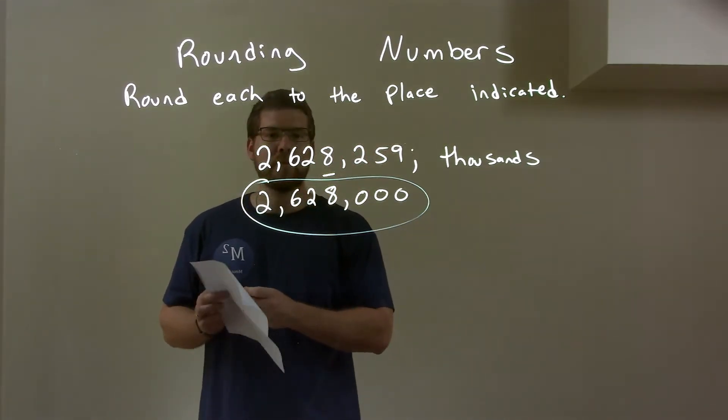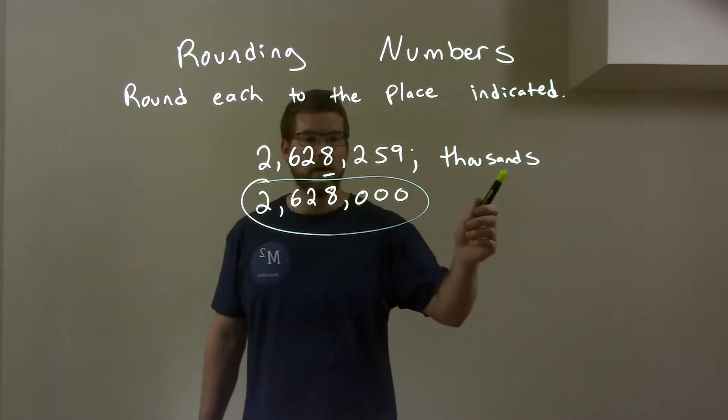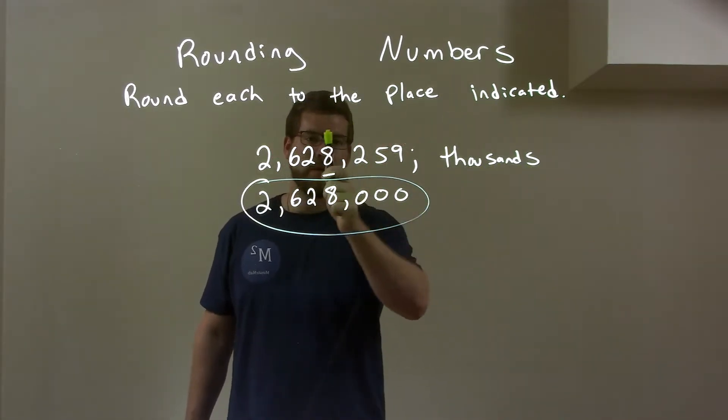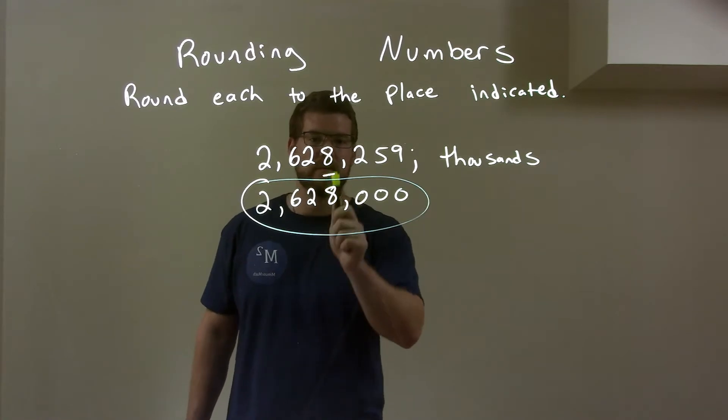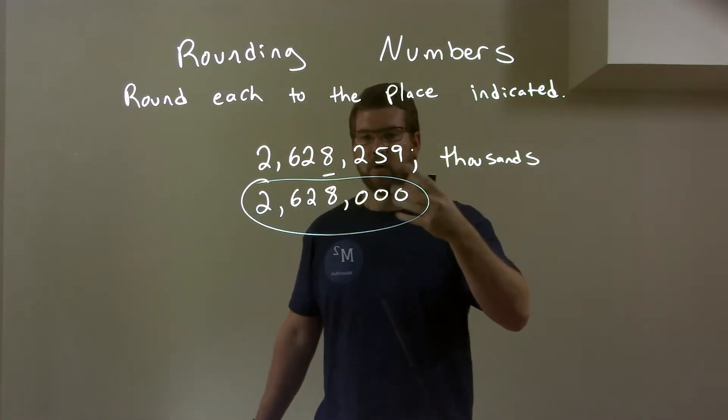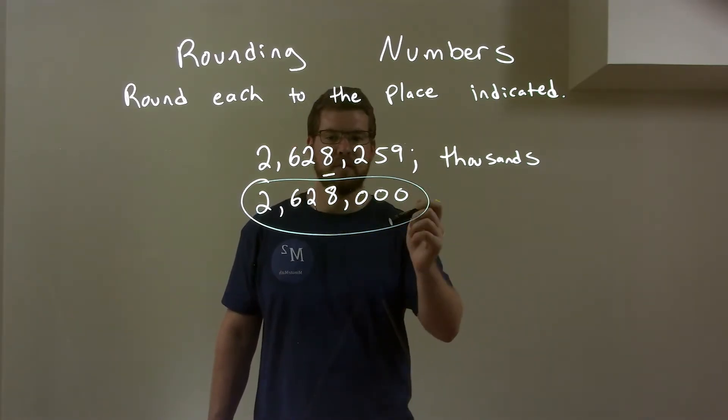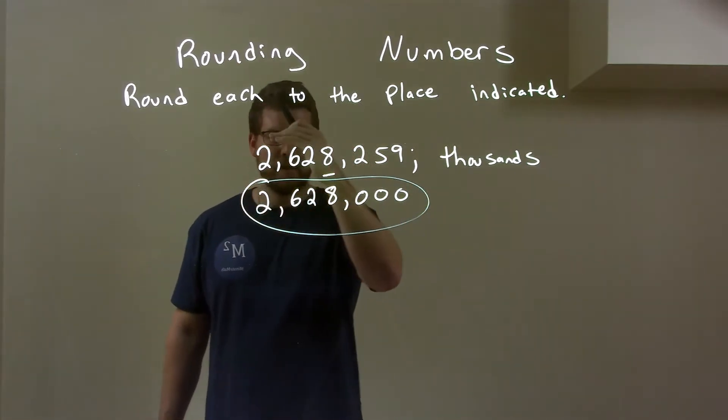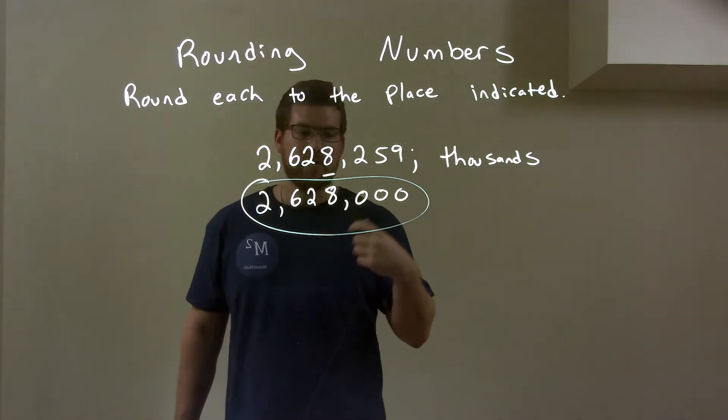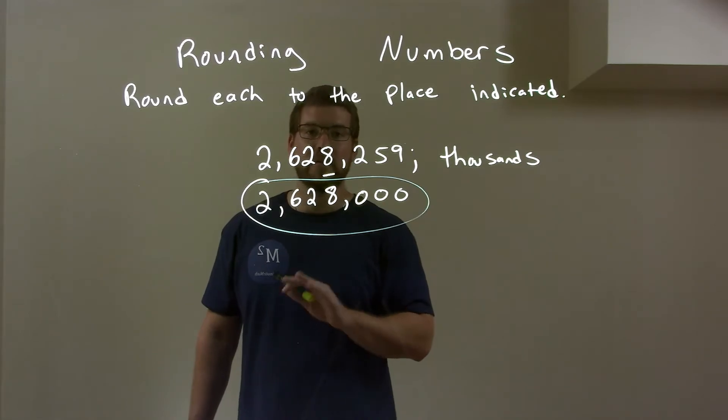So, a quick recap. We're given 2,6,2,8,2,5,9, and we need to round in the thousands. Well, I indicated that would be right here at the 8 in the thousands place. Then I look to the right. 2 is between 0 and 4, so we're rounding down. 8 stays the same. Everything else to the right becomes a 0. And then I kept everything on the left-hand side, brought that down. So, again, we have our final answer of 2,628,000. And that's it.